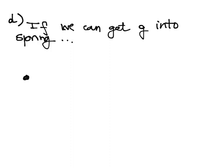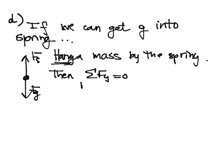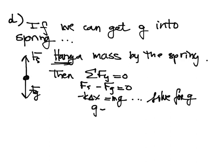And the way we can do that is if we just hang a mass without making it oscillate by the spring. And if we do that, then we know that our forces are Fs and Fg. Then using Newton's second law, we can say ΣFy equals zero because it's just hanging. Fs minus Fg equals zero and we can say that -kΔx is equal to mg and we can solve for g and g is equal to -kΔx divided by m.